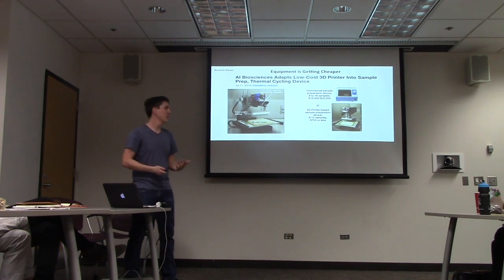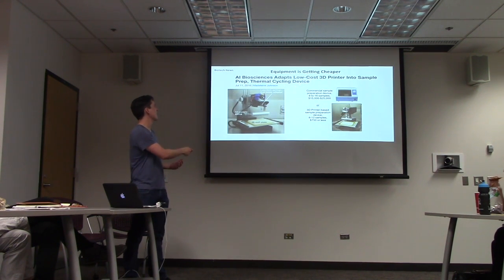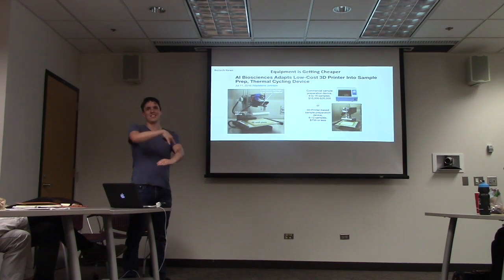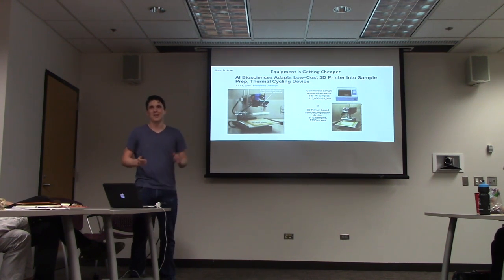And equipment's getting cheaper. So AI Biosciences, they took a 3D printer, a cheap $750 printer, and they turned it into like a high-throughput sample analysis thing. And you can now do RT-PCR on it. It's like 20 times cheaper than a commercial prep device.